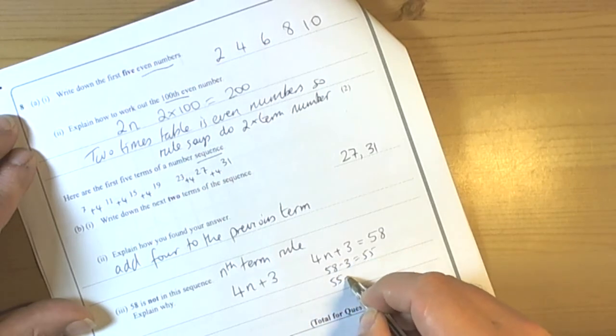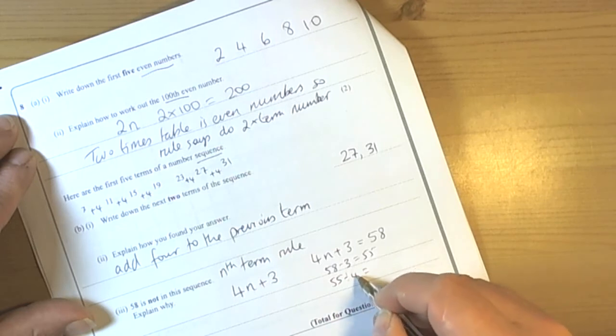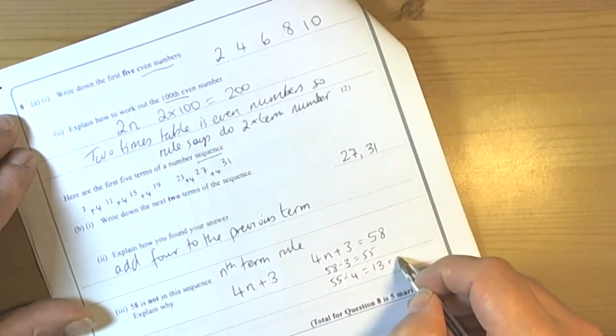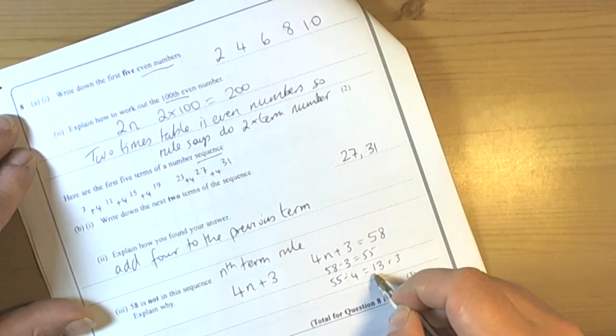we could share 55 by 4 and we get an answer of 13. 14, 4s are 56. So it's going to be 13 remainder. Well because there's a remainder then 58 cannot be in the sequence because if it was a term then it would give you a whole number.